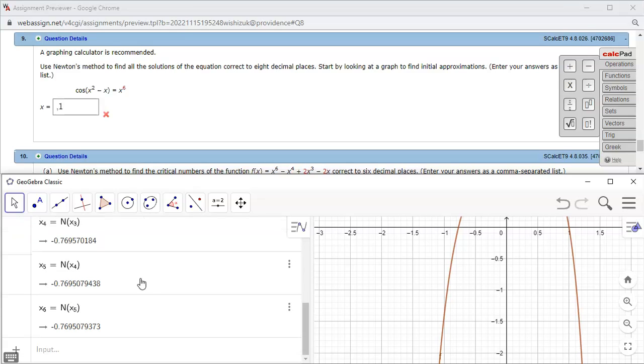So it looks like we're going to have, let's see, negative 0.769508, 8 decimal places, so you have a 9, 4. Let's type it in, so it's negative 0.7695079494.